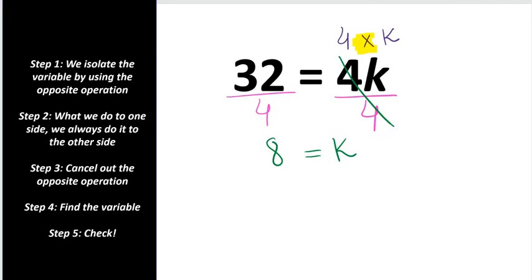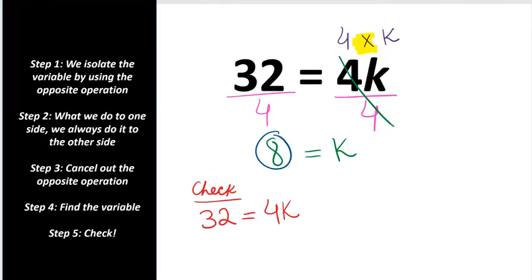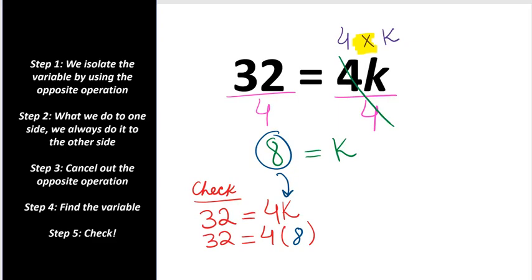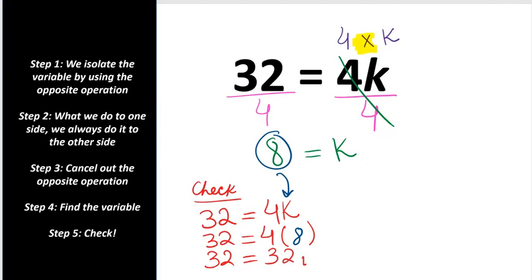So k equals 8. Let's check our work. Let's copy down the equation and substitute 8 inside it. So 4 times 8 is 32 — right side equals the left side. Give yourself a check mark.